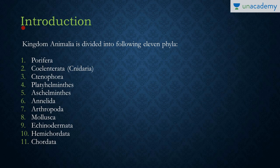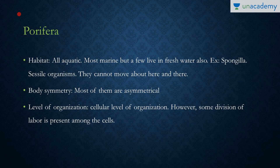Let's get started. Firstly, I'd like to introduce you to all 11 phyla of the animal kingdom so that you have a priming and know the names. We have: Porifera, Coelenterata, Ctenophora, Platyhelminthes, Aschelminthes, Annelida, Arthropoda, Mollusca, Echinodermata, Hemichordata, and finally Chordata. Now let's start with the first phylum, Porifera.